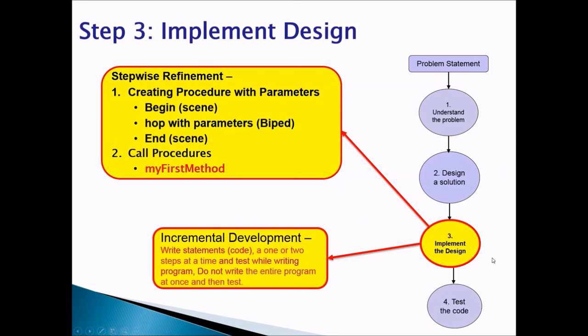Step three, we're going to implement the design. We're going to create three procedures. We would create procedure begin, that would be a superclass scene procedure. We would create a hop procedure with some parameters, and that would be in a biped superclass. And the end is going to be a scene procedure. Now, you're going to call the procedures in myFirstMethod to make this animation happen. And don't forget to do incremental development as you're writing the procedures.